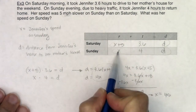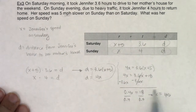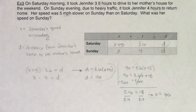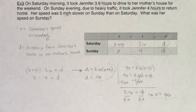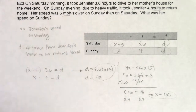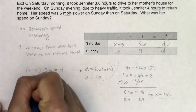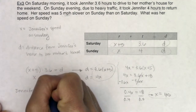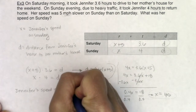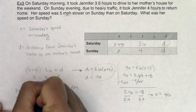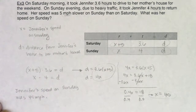x was the quantity I was looking for — her speed on Sunday. We got 45. In a real-world problem you have to include units. This was her rate, her speed on Sunday, and the units are miles per hour. So Jennifer's speed on Sunday was 45 miles per hour.